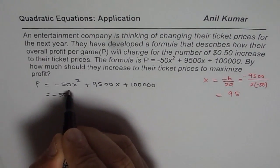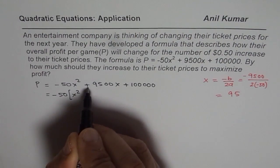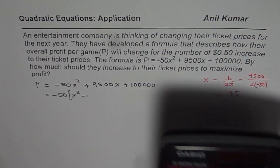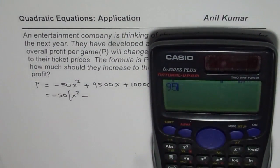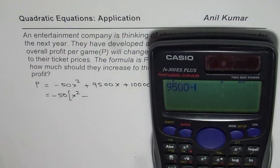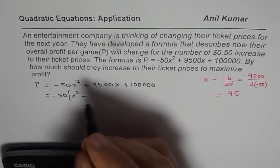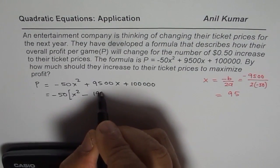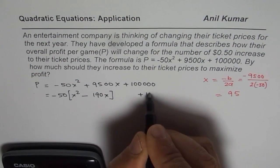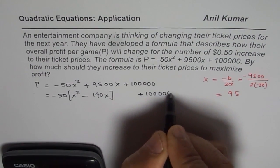Now let's practice how to do completing squares. We will factor minus 50, you are left with x squared. This sign changes. And you have to divide 9500 by 50. So when you divide that by 50 you get 190. So I will write this as 190x and keep this 100,000 away for the time being.